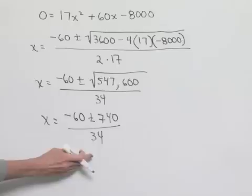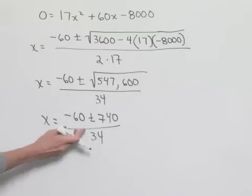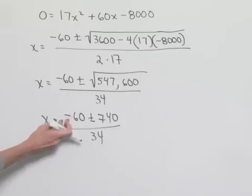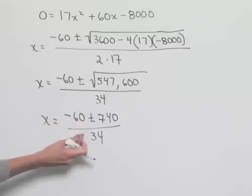But remember, what we're looking for would be a positive value only, because we're looking for something in the future. That means that we can go ahead and just look at the positive 740 in this equation.